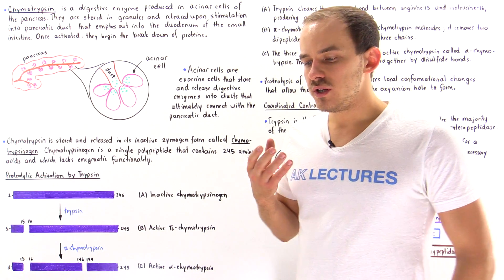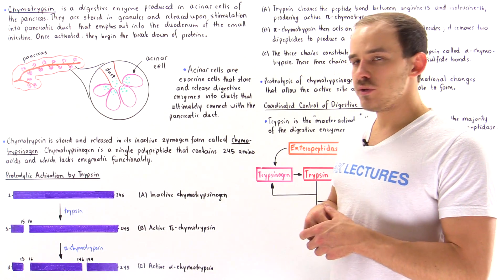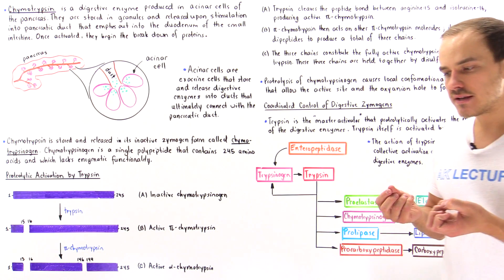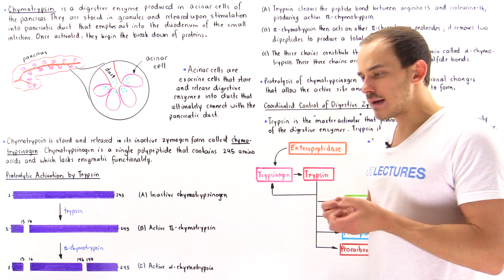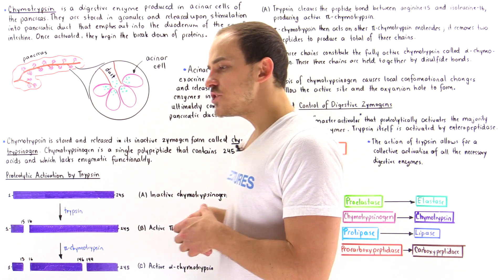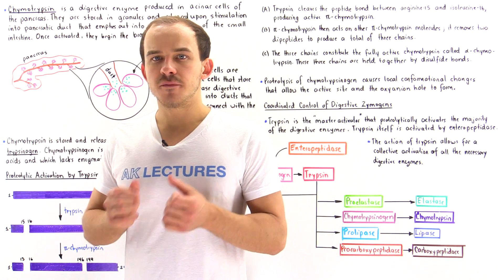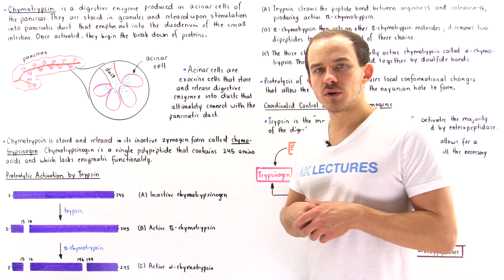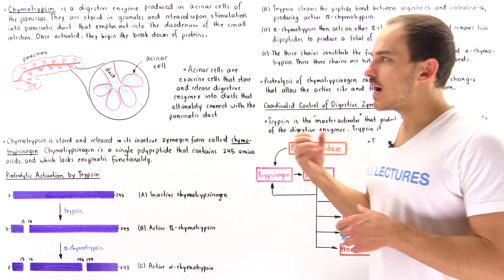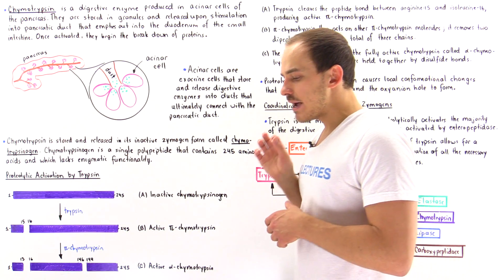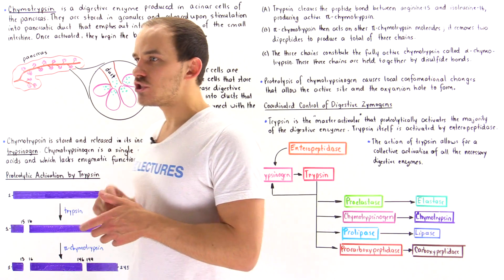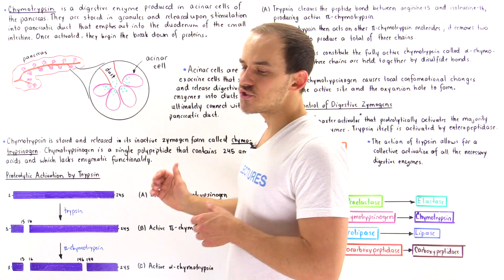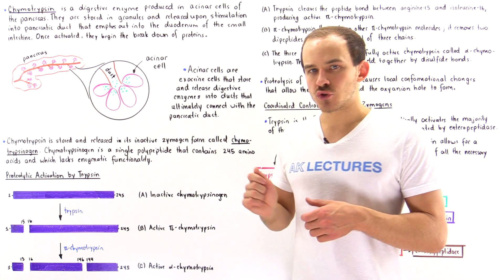In our introduction to proteolytic cleavage, we mentioned that digestive enzymes are examples of enzymes found inside our body which are activated proteolytically. This is what I'd like to focus on in this lecture, beginning with a specific digestive enzyme known as chymotrypsin.